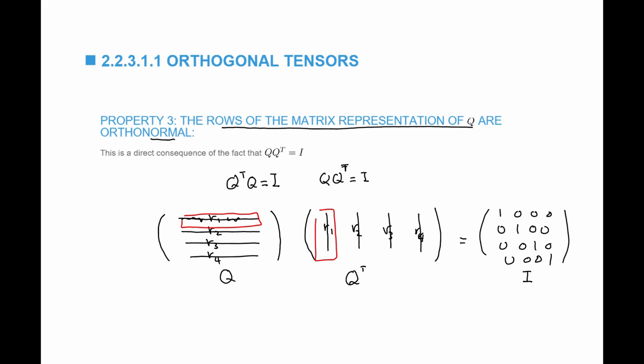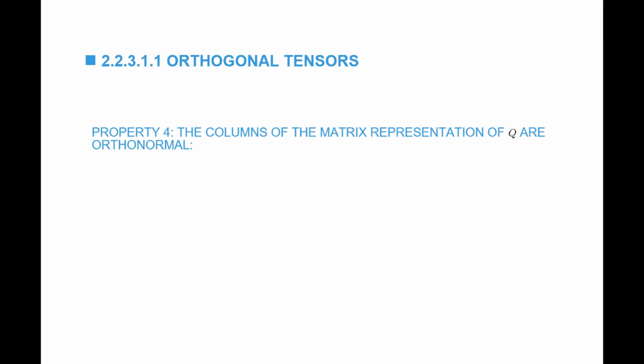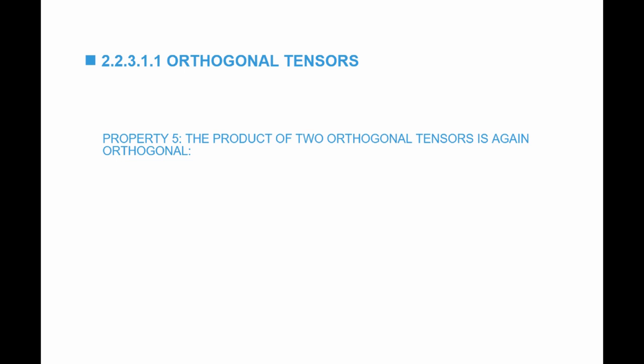Similarly, from Q transpose Q equals I, the columns of the matrix representation of Q are also orthonormal. Furthermore, the product of two orthogonal tensors is again orthogonal. This can be seen easily: if Q1 and Q2 are both orthogonal, then (Q1 Q2)(Q1 Q2) transpose equals Q1 Q2 Q2 transpose Q1 transpose, which equals Q1 Q1 transpose, which equals I. Therefore the product is also an orthogonal tensor.